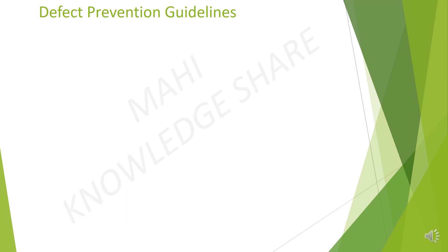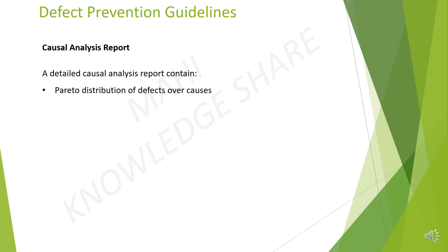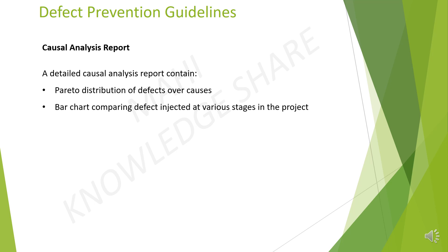Causal analysis report. A detailed causal analysis report should contain Pareto distribution of defects over causes. The Pareto principle or 80-20 rule states that 80% of the defects are due to 20% of the causes. It shows that the level of inputs and outputs is not always equal. Bar chart comparing defects injected at various stages in the project. A bar graph can be defined as a graphical representation of data, quantities or numbers using bars or states. Bar charts are used to compare and contrast different types of defect data that are injected in different frequencies.